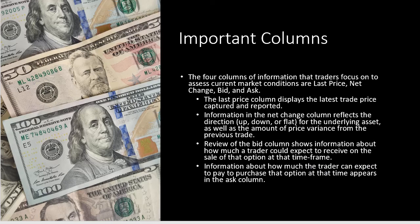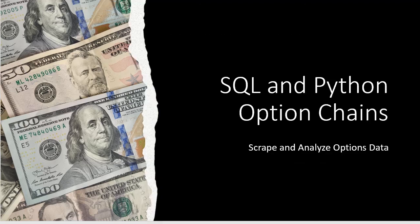To reiterate, the four columns of information that traders focus on to assess current market conditions are Last Price, Net Change, Bid, and Ask. The Last Price column displays the latest trade price captured and reported. The Net Change column reflects the direction — up, down, or flat — for the underlying asset, as well as the amount of price variance from the previous trade. The Bid column shows how much a trader should expect to receive on the sale of that option. The Ask column shows how much the trader can expect to pay to purchase that option.